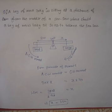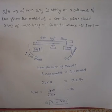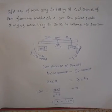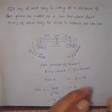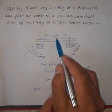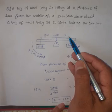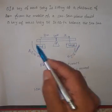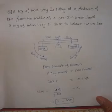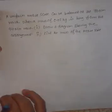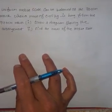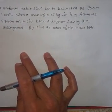So using the principle of moments, I calculated the anti-clockwise moment and the clockwise moment, and found the distance where the 40 kilogram force must be applied: 1.5 meters from the midpoint. At this distance, the seesaw will be balanced. That completes the first question.